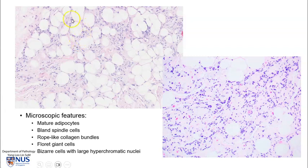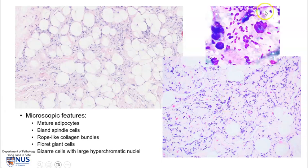Microscopically, there are also lots of mature adipocytes, but at the same time there are these spindle cells which look very bland, and they are arranged in short parallel bundles. There is also often pink ropey collagen in between the adipocytes. Here is the pleomorphic lipoma area where we can see some multi-nucleated giant cells. The nuclei can be arranged in a sort of a circle, and these are known as floret cells or floret giant cells. Sometimes there are also large cells with hyperchromatic bizarre nuclei, hence the name pleomorphic lipoma.